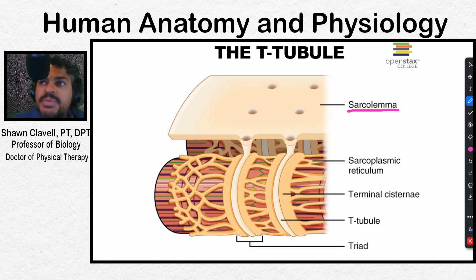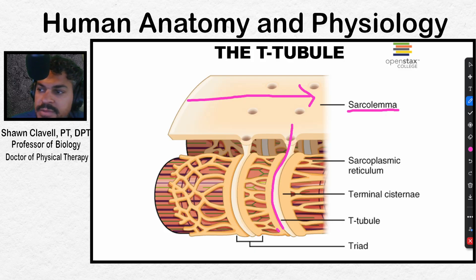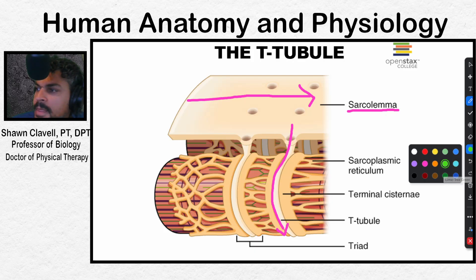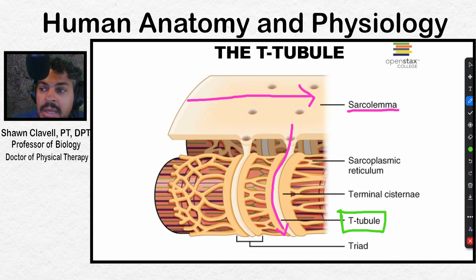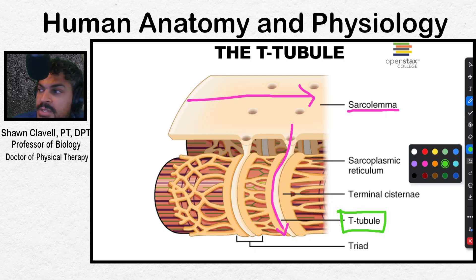When this action potential travels all the way across the sarcolemma, it will also travel down the transverse tubules, also referred to as the T-tubules. The T-tubules are an invagination of the sarcolemma that actually goes into the muscle cell itself, wraps around the myofibrils, and butts up against the sarcoplasmic reticulum.